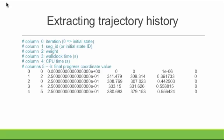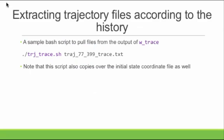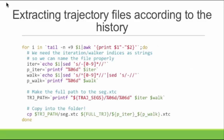In my tutorial, there's a bash script that actually pulls files out of the history you just extracted. This script crawls over the entire trace file, pulls segment IDs and iterations, finds the XTC files (Gromacs coordinate files), and copies them into a single folder. It pads the iteration and segment numbers with zeros to construct the full file path, and at the end stitches them together. I just wanted to show you what that looks like.